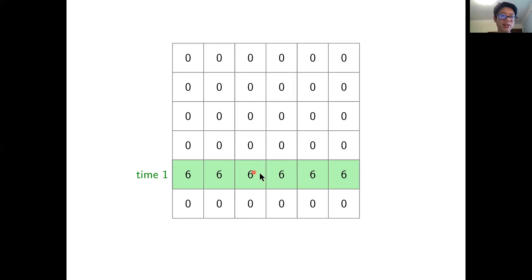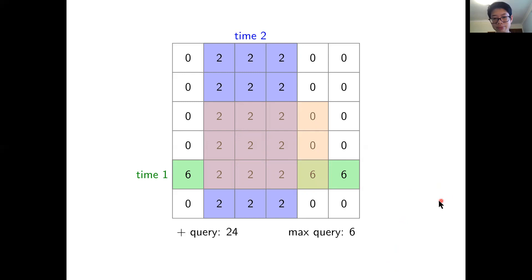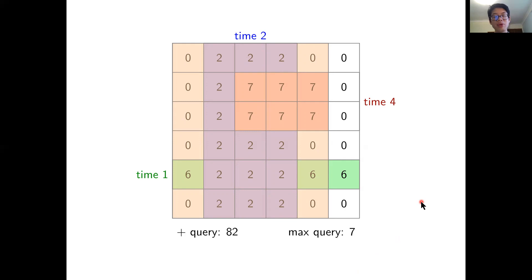As an example using set updates, we can set a row to 6, set a range of columns to 2, and then query over a specific range. If this is a sum query, we return 24; if it's a max query, we return 6, since that is the maximum value in the range. We can continue supporting updates and queries after that.